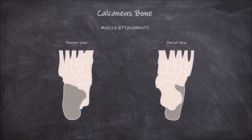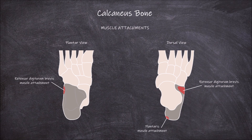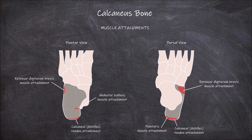Several muscles attach to parts of this bone. A portion of the extensor digitorum brevis muscle originates from the superolateral surface of this bone. The tendon of the plantaris muscle inserts onto the medial side of the posterior surface of this bone. Lateral to this, the shared tendon of the gastrocnemius and soleus muscles, known as the calcaneal tendon or the Achilles tendon, inserts onto this posterior surface. A portion of the abductor hallucis muscle originates from the medial process of the calcaneal tuberosity of this bone.